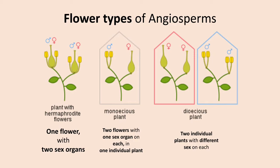There are three types of flowers in angiosperms. First is the plant with hermaphrodite flowers — one flower with two sex organs. The second is the monoecious plant, which has two flowers each with one sex organ but both exist on the same plant. The last type is the dioecious plant, where there are two individual plants with different sexes on each plant.